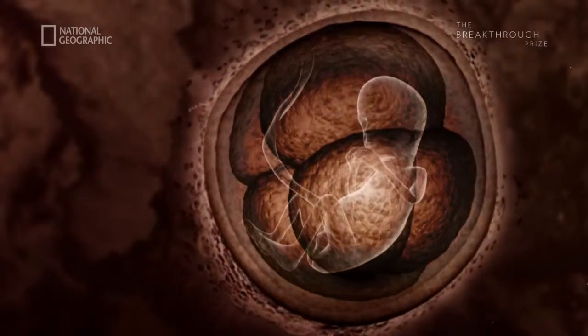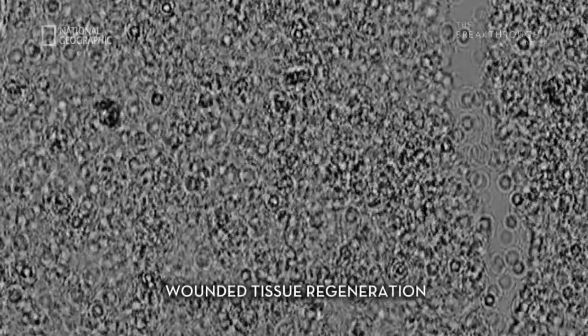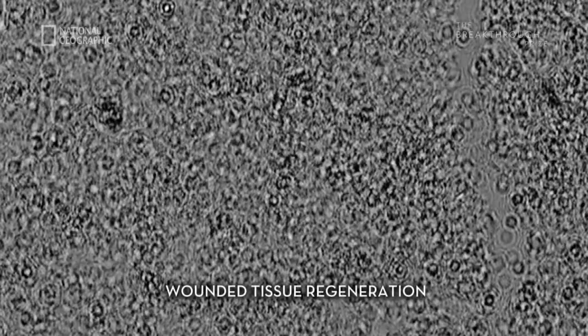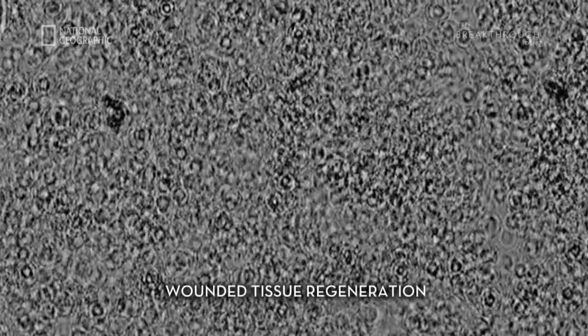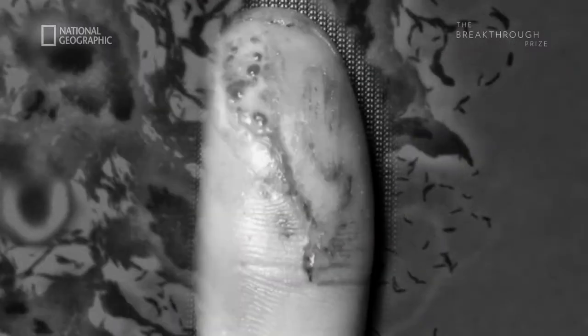The Wnt pathway sends signals to cells to divide in the correct manner. One example is wound healing — cells become activated by damage to a tissue and then the neighboring cells start to divide. All of those molecules become activated locally to make sure that the wound is going to heal.